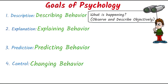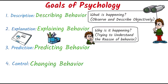First we have description. In description we answer the question: what is happening? The first task in psychology is to observe behavior carefully and to describe it objectively. In explanation we answer the question: why is it happening? Psychologists want explanation and try to understand the reason why of the behavior, and find out why the behavior is occurring.